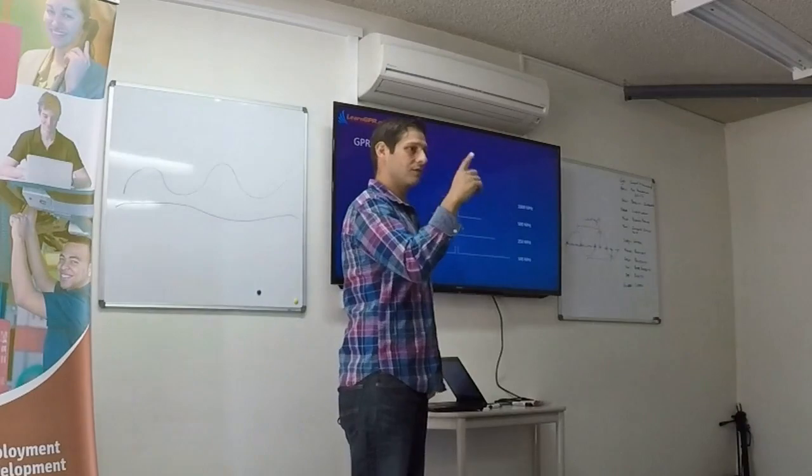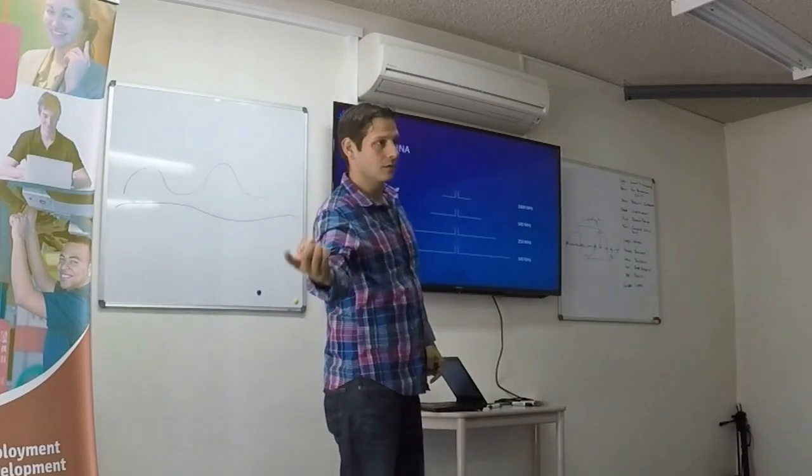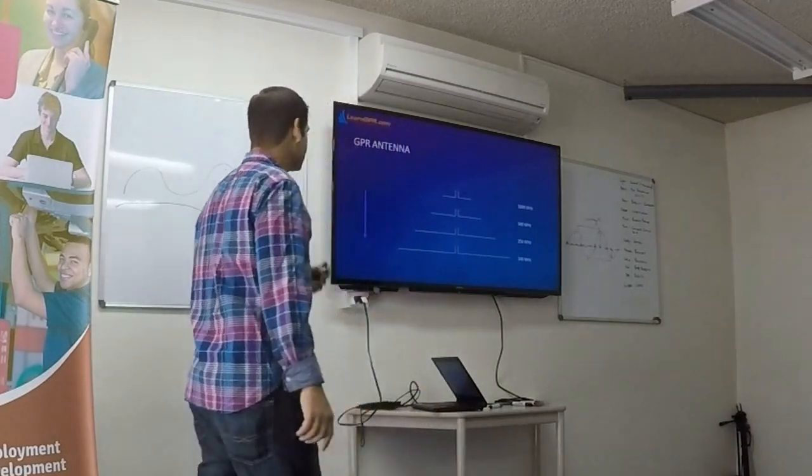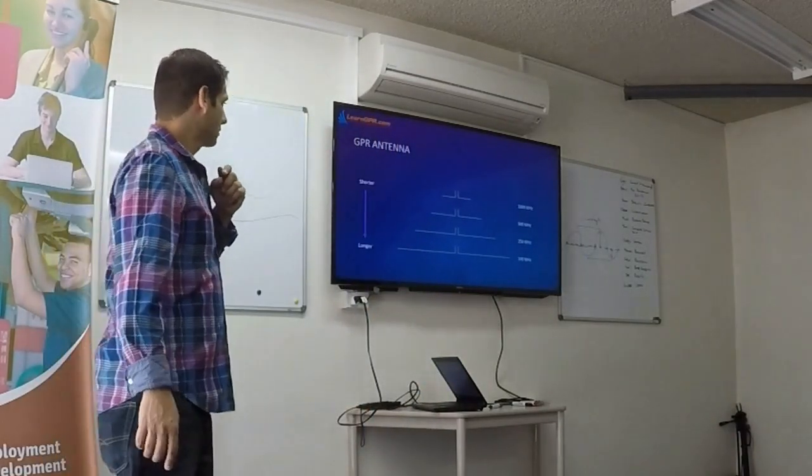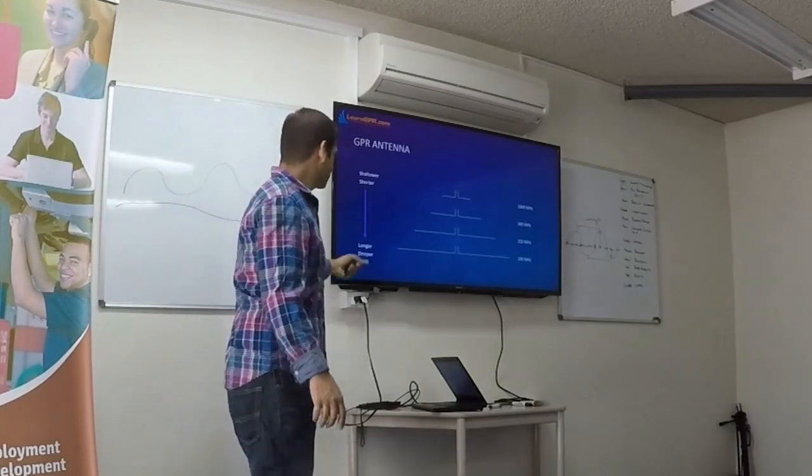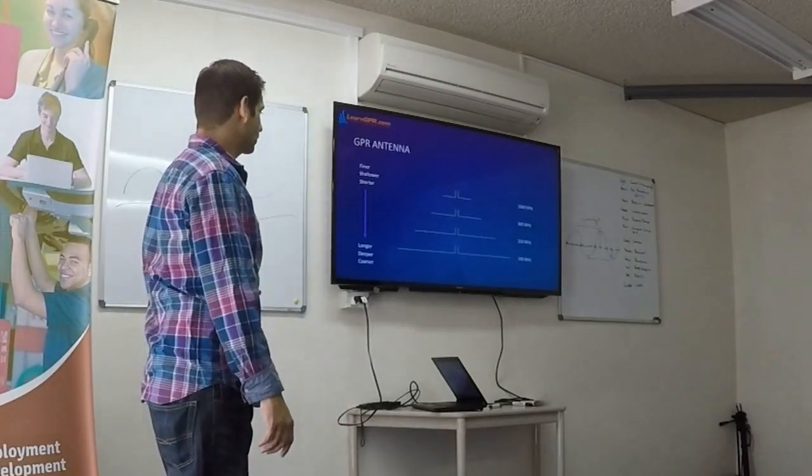So faster oscillations produce shorter wavelengths. Slower oscillations produce longer wavelengths. Same energy. So shorter to longer wavelengths, shallower to deeper, finer to coarser.